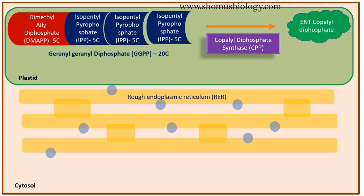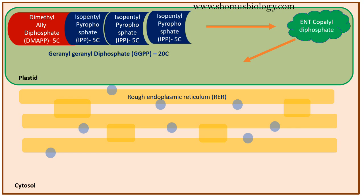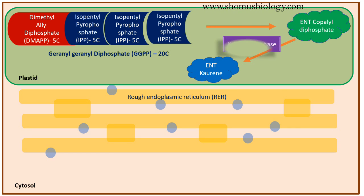This GGPP will be further converted into ENT-copalyl diphosphate by the enzyme copalyl diphosphate synthase (CPS), which is found inside the plastid of the plants. This ENT-copalyl diphosphate will then be further converted into ENT-kaurene by the enzyme kaurene synthase, which is also found in the plastid of the plant cell.